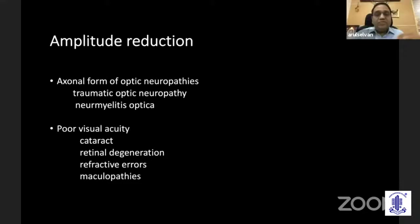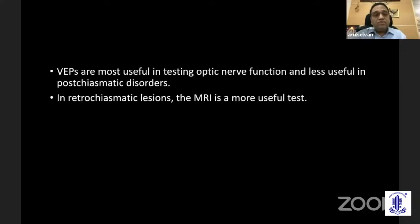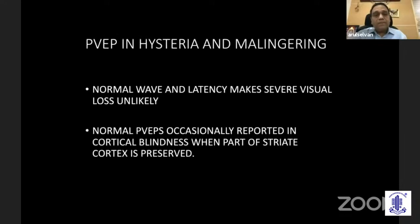Poor visual acuity also indicates amplitude reduction, commonly seen in mature cataract, retinal degeneration, refractive errors, and maculopathy. VEPs are most useful in assessing optic nerve function, but for retrochiasmic lesions, MRI is more useful. In hysterical blindness and malingering, as well as cortical blindness, normal waveform and latency help diagnose hysteria and cortical visual loss.